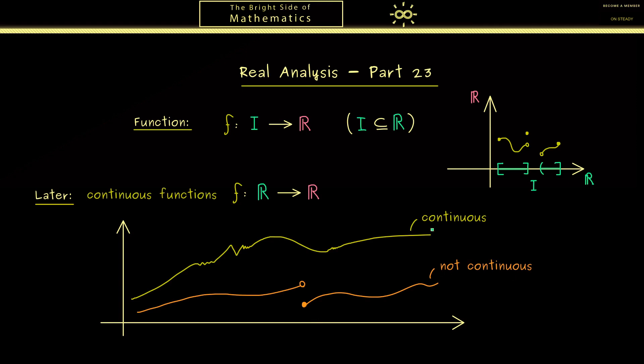Now the idea of continuity is always that small errors on the x-axis translate back to small errors on the y-axis. For example, in the case of this jump here, our implication is not given. You see this if you imagine that we push the number x here just a little bit to the left. Then the value of y immediately has a big leap to this point. So no matter how small the change in x is, the change in y is always this large. Therefore the property continuity will guarantee this nice property here.